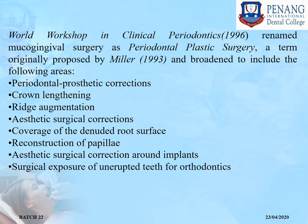The World Workshop in Clinical Periodontics renamed mucogingival surgery as periodontal plastic surgery, a term originally proposed by Miller, and broadened it to include: periodontal-prosthetic corrections, crown lengthening, ridge augmentation, aesthetic surgical corrections, coverage of the denuded root surface, reconstruction of papilla, aesthetic surgical corrections around implants, and surgical exposure of unerupted teeth for orthodontics.